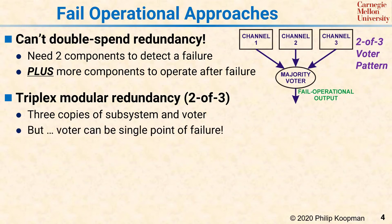However, the voter is a single point of failure, because a broken voter can do whatever it wants. Thus, for high SIL applications, such as life-critical applications, you either need to have redundancy inside the voter to make sure the voter itself is reliable, or use some other approach. A key observation here is that triplex modular redundancy does not have three components, but rather four components, and the majority voter is a significant reliability bottleneck for the whole system.